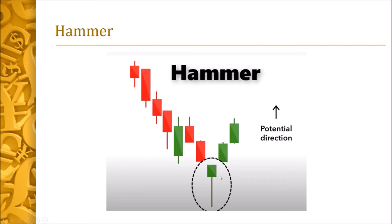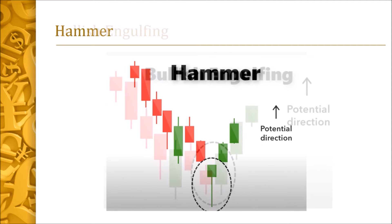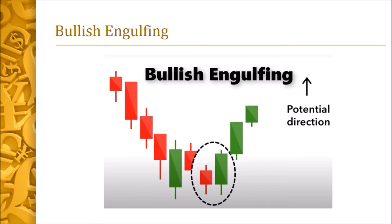The hammer is a candlestick with a large body at the extreme end, which signifies buying power or buying pressure. It forms after a series of red candles, and after its formation there will be a series of green candles. This candlestick pattern is very useful when it occurs at the second leg of a W.